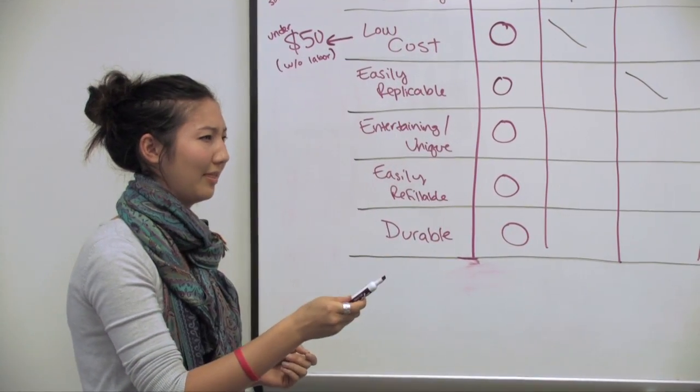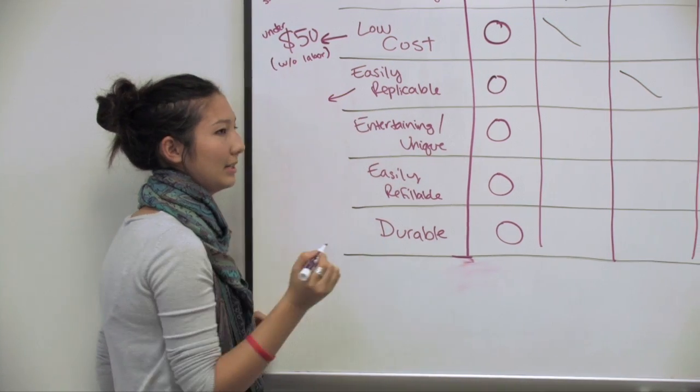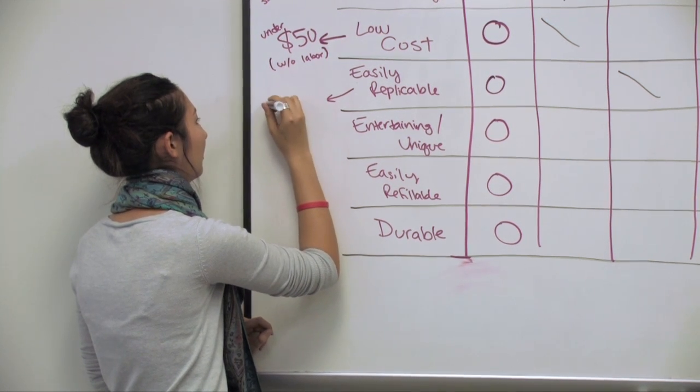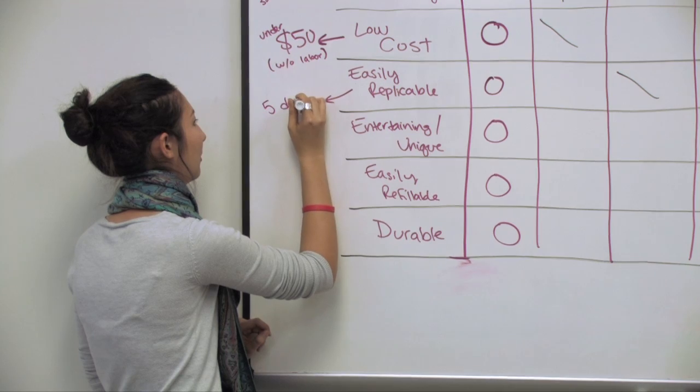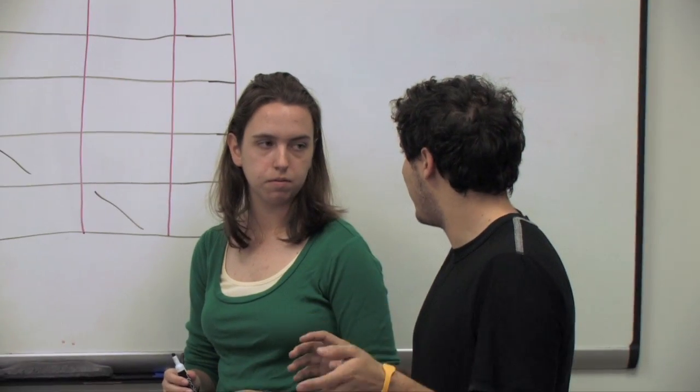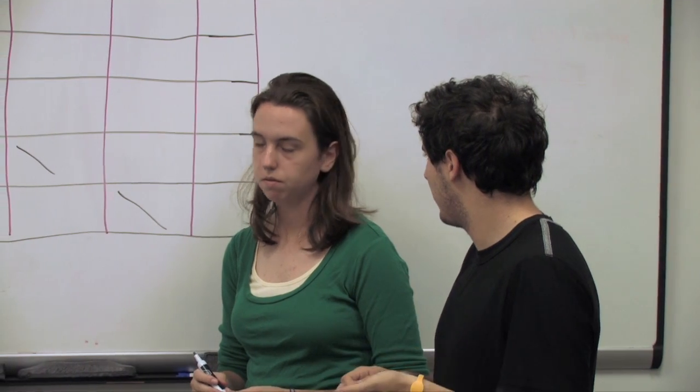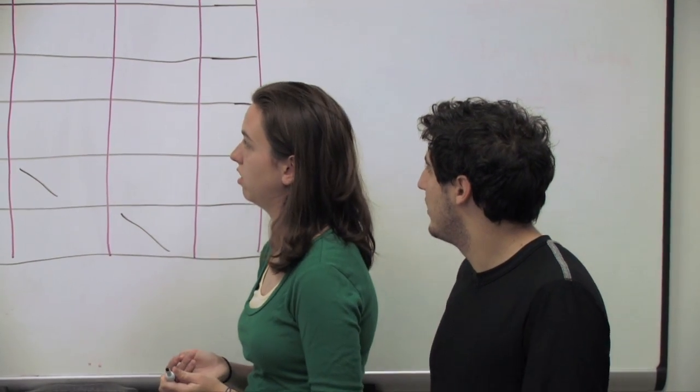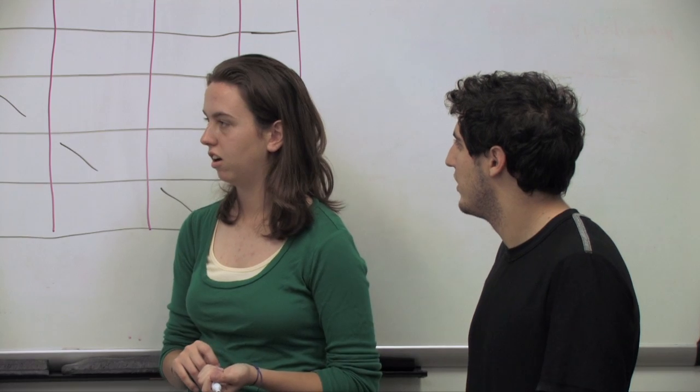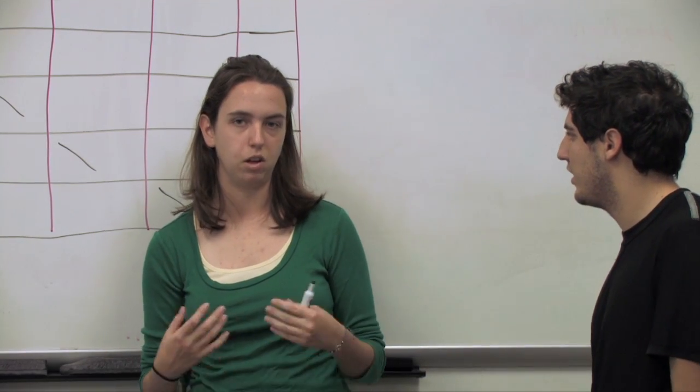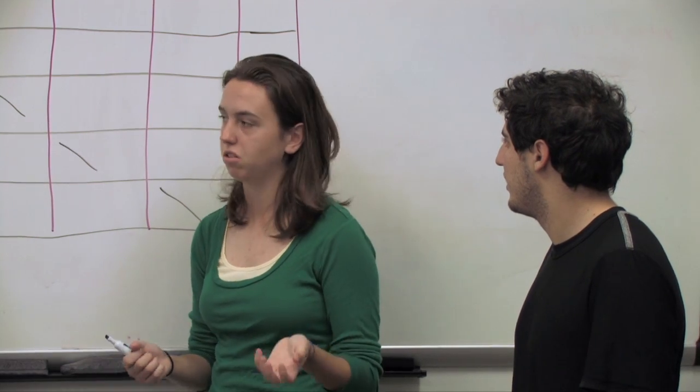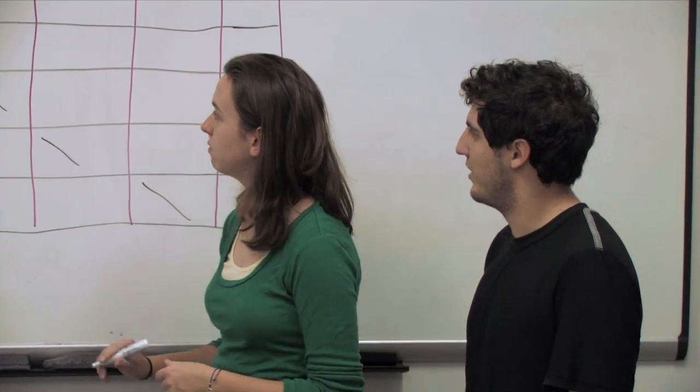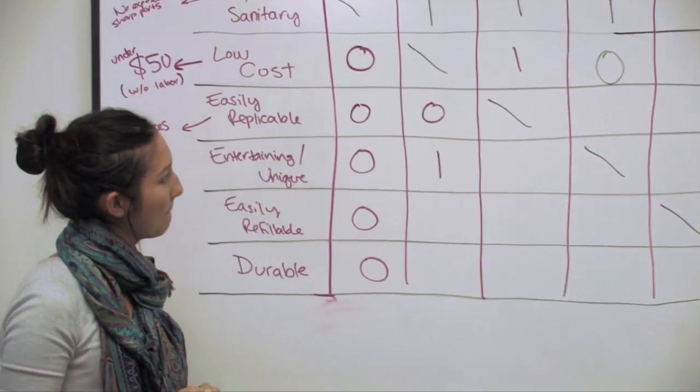Easily replicable. I guess we should first define that. Oh yeah they want five of them. And they want somebody else to be able to look at our plans. Oh yeah because if we ever decide to stop or they need another one after we're done then they need like a way to do it again. Low cost versus entertaining and unique. I feel like for this one entertaining and unique should win because that's something they really stressed to us, they wanted it to be something cool and exciting. And if they were really stressing low cost over entertaining and unique they could just go buy a normal soap dispenser.